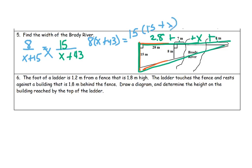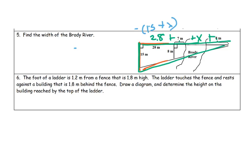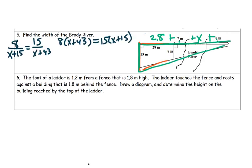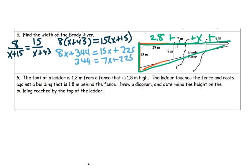Distributing: 8x plus 344 equals 15x plus 225. Subtract 8x from both sides to get 344 equals 7x plus 225. Subtract 225 from both sides: 7x equals 119. Divide by 7, and x will equal 17.